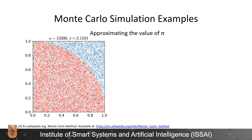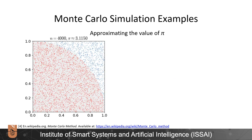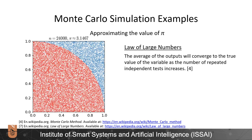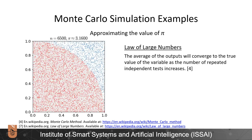The visualization of this simulation is shown on this slide. Notice that as the number of generated points n increases, the approximation of pi becomes closer and closer to its actual value. In statistics, this phenomenon is called the law of large numbers. It states that the average of the outputs will converge to the true value of the variable as the number of repeated independent tests increases.